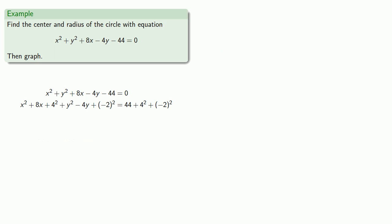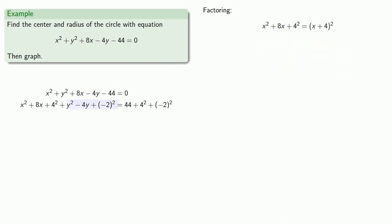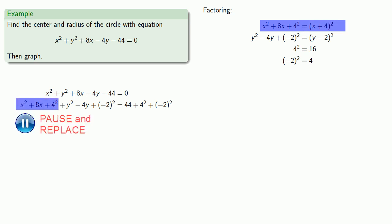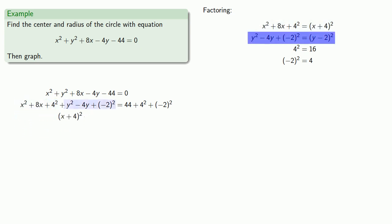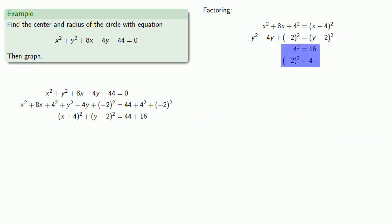We went through all this trouble to make our x terms and y terms each part of a perfect square, so let's do that factoring. x squared plus 8x plus 4 squared factors as (x plus 4) squared. And y squared minus 4y plus (minus 2) squared factors as (y minus 2) squared. Cleaning up the arithmetic: 4 squared is 16 and (minus 2) squared is 4. So x squared plus 8x plus 4 squared becomes (x plus 4) squared, and y squared minus 4y plus (negative 2) squared becomes (y minus 2) squared.